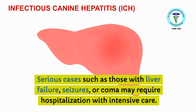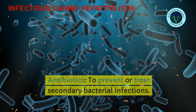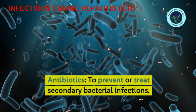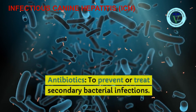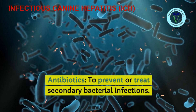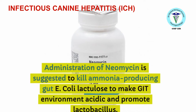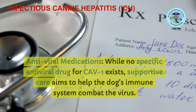Serious cases such as those with liver failure, seizures, or coma may require hospitalization with intensive care and appropriate medication based on clinical signs. Antibiotics are used to prevent or treat secondary bacterial infections. Administration of neomycin is suggested to kill ammonia-producing gut E. coli, and lactulose to make the GI environment acidic and promote Lactobacillus growth.